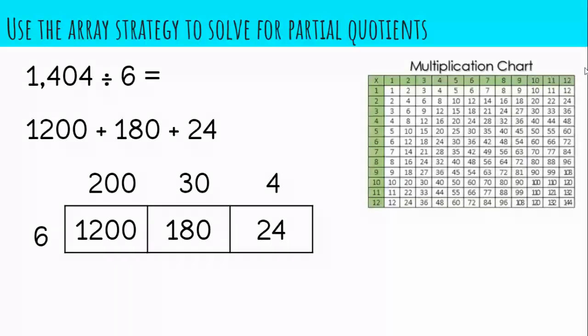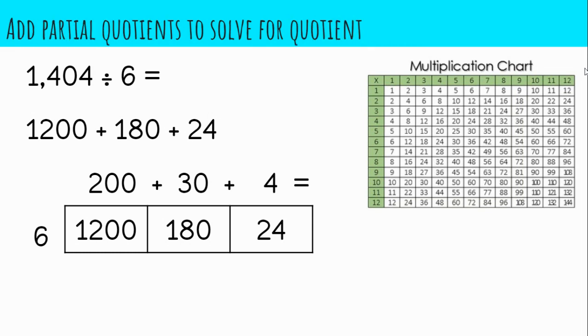Now, just as you did yesterday, we're going to take the partial quotients and add them to find the sum. And now we have our quotient, 234.